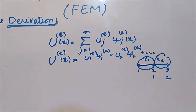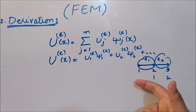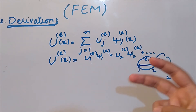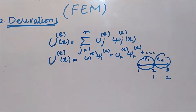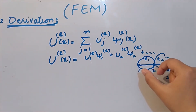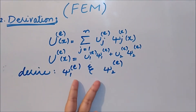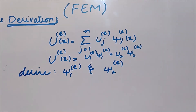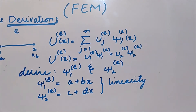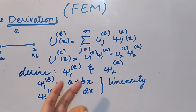In global node numbering we have 1, 2, and 3, but in local node numbering we have 1, 2 and 1, 2 — because we have only two nodes per element. So let's derive shape functions for just two nodes per element, assuming a linear approximation. We need to derive ψ_1 and ψ_2 for a particular element. Since it is linear, the shape function is written as a + bx for ψ_1 and c + dx for ψ_2.